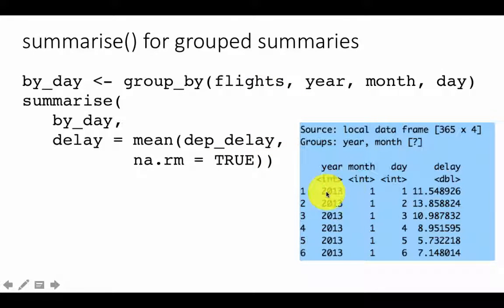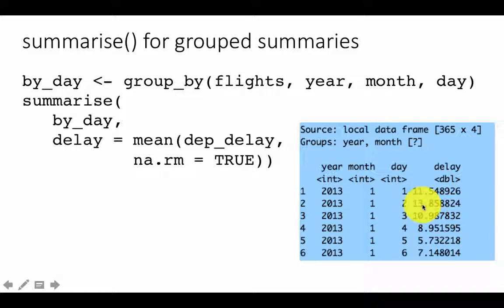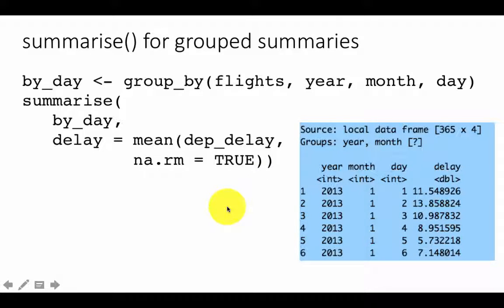And that is what you see in the output: 2013, month 1, day 1 — January 1 — the delay was a certain value. The second day the delay was another value, and so on. That is how this is working — it is just a similar application to what we did earlier.